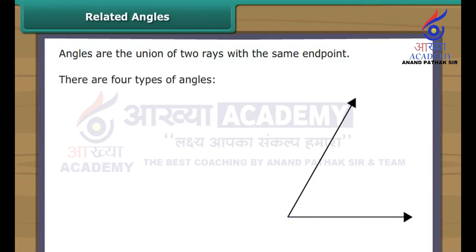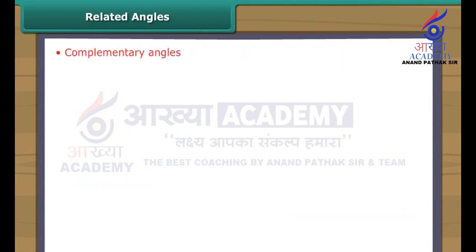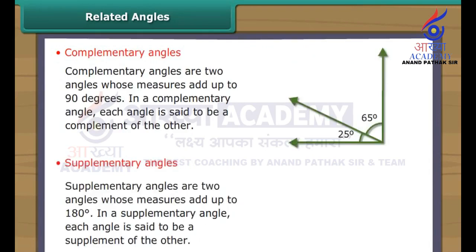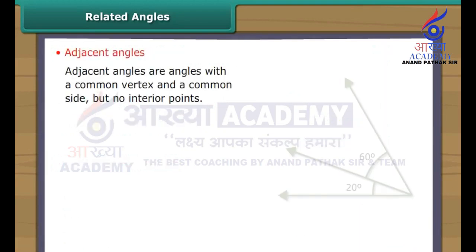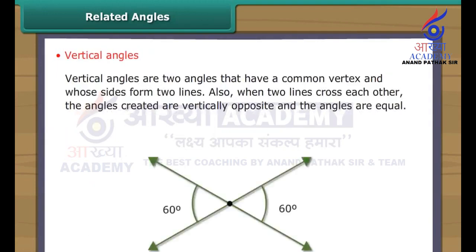There are four types of angles. They are complementary angles, supplementary angles, adjacent angles, and vertical angles. Complementary angles are two angles whose measures add up to 90 degrees. Supplementary angles are two angles whose measures add up to 180 degrees. Adjacent angles are angles with a common vertex and a common side but no interior points. A pair of adjacent angles with rays as the non-common sides is called a linear pair. Vertical angles are two angles that have a common vertex and whose sides form two lines.